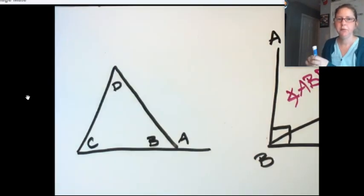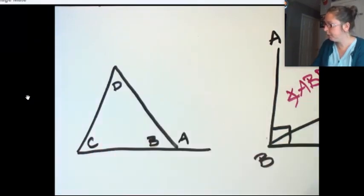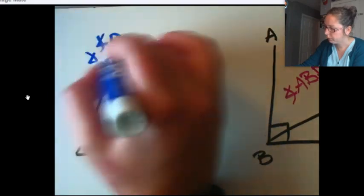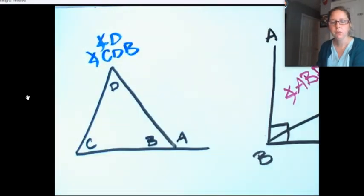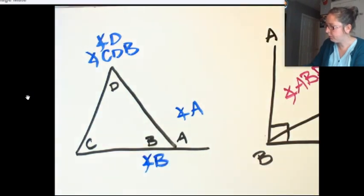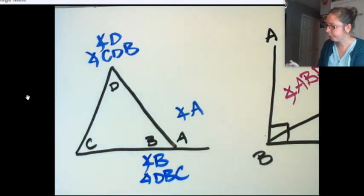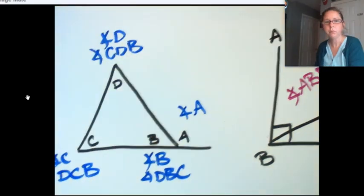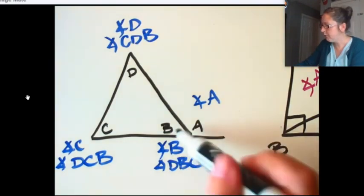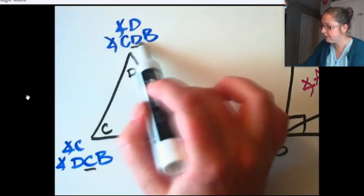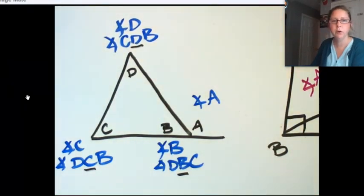In this figure in blue, because there's only a variable there, you could say angle D, or you could say angle C, D, B. This here would be angle A, angle B, or angle D, B, C. This is angle C, or angle D, C, B. Notice that whenever I use all three letters, the vertex B is in the middle, the vertex C is in the middle, and the vertex D is in the middle. That is important when you're naming angles.